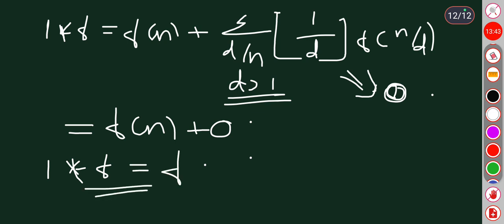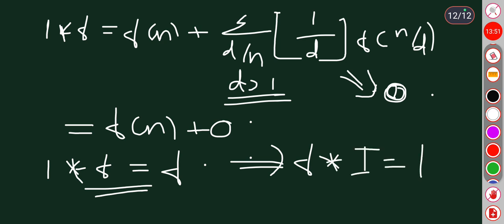Since Dirichlet multiplication is commutative, f star I also equals f. So f star I equals I star f equals f. These are two important theorems regarding Dirichlet products of arithmetic functions.